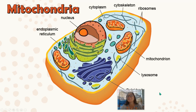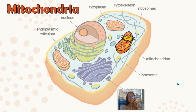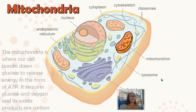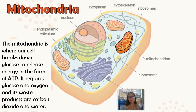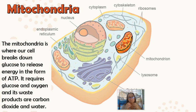The mitochondria is a special organelle with two membranes — a double membrane organelle — with an inner membrane with folds and an outer membrane. The mitochondria is often called the powerhouse of the cell. Its job is to take glucose or other food molecules like fat or protein, break them down in the presence of oxygen, and release energy in the form of ATP. The waste products it makes are carbon dioxide and water.